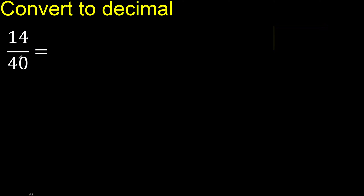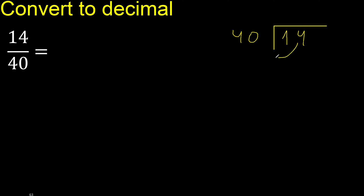14 divided by 40. 14 is less, therefore complete — always complete with 0. Here: 0 point.